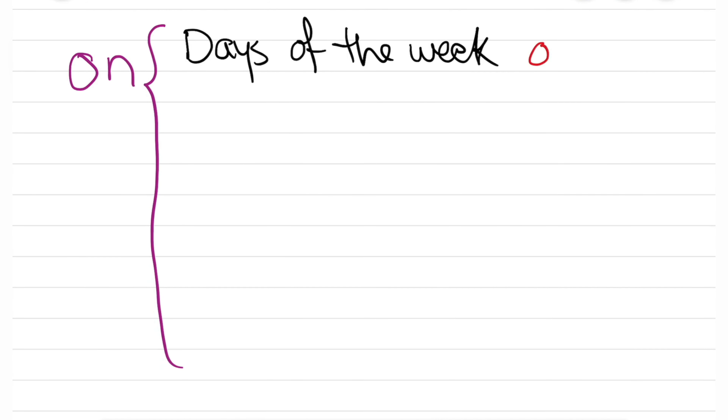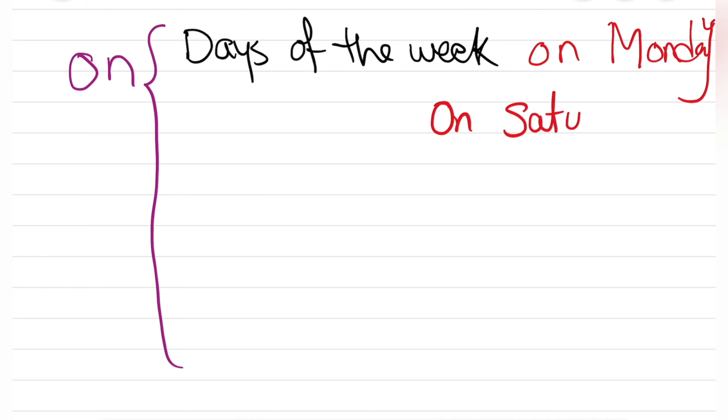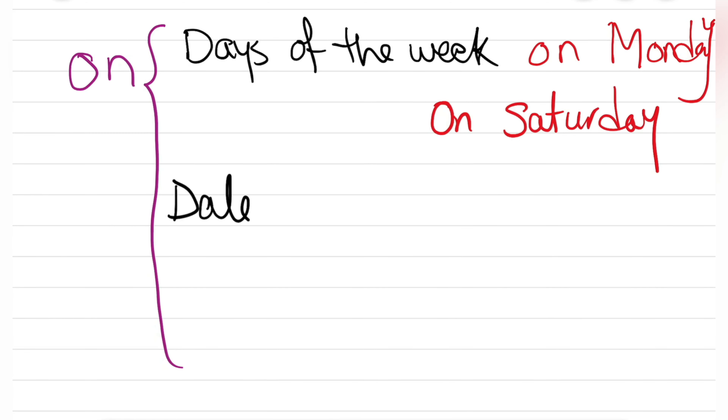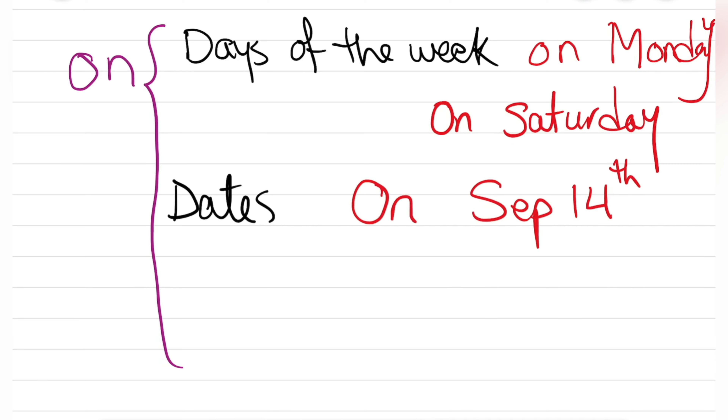Now, we use the preposition ON for days of the week. For example, 'I saw my friend on Saturday,' 'I went there on Wednesday.' We never say 'in Monday' — we say 'on Monday,' 'on Saturday.' We also use ON to talk about dates — for example, 'I was born on April 10th,' 'she will return my book on May 3rd,' or 'on September 14th.'